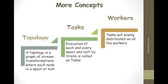Now we have a basic idea about what spouts and bolts are. They are the smallest logical unit of the topology, and a topology is built using a single spout and an array of bolts. They should be executed properly in a particular order for the topology to run successfully.